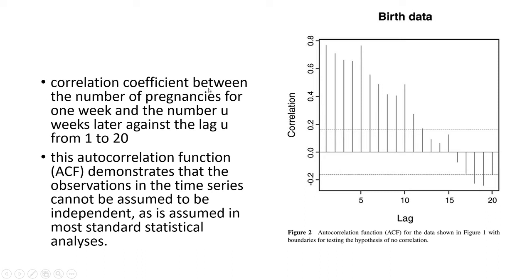The correlation coefficient between the number of pregnancies for one week and the number u weeks later is plotted against the lag u from lag 1 to lag 20. This autocorrelation function, or ACF in short, demonstrates that observations in time series cannot be assumed to be independent. This violates most standard statistical analyses.